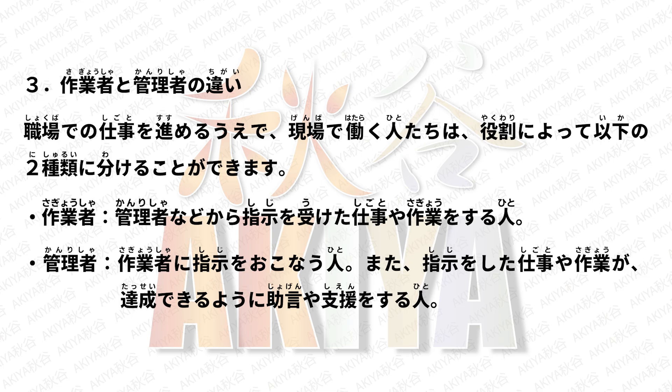3. 作業者と管理者の違い — 職場での仕事を進める上で、現場で働く人たちは役割によって以下の2種類に分けることができます。作業者：管理者などから指示を受けた仕事や作業をする人。管理者：作業者に指示を行う人、また指示をした仕事や作業が達成できるように助言や支援をする人。